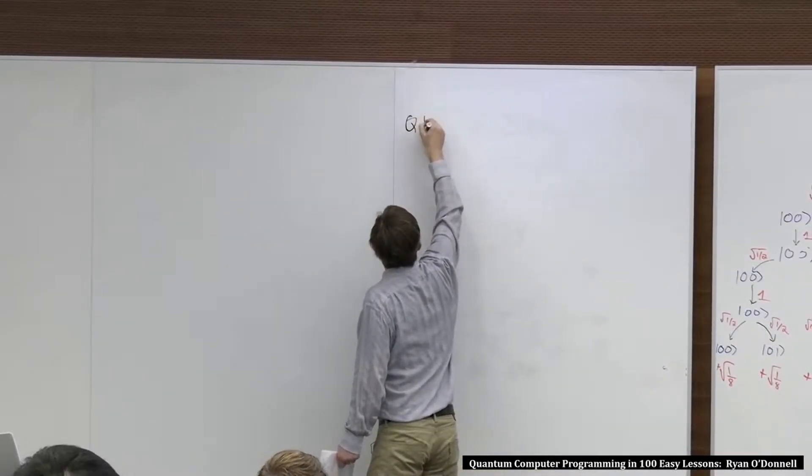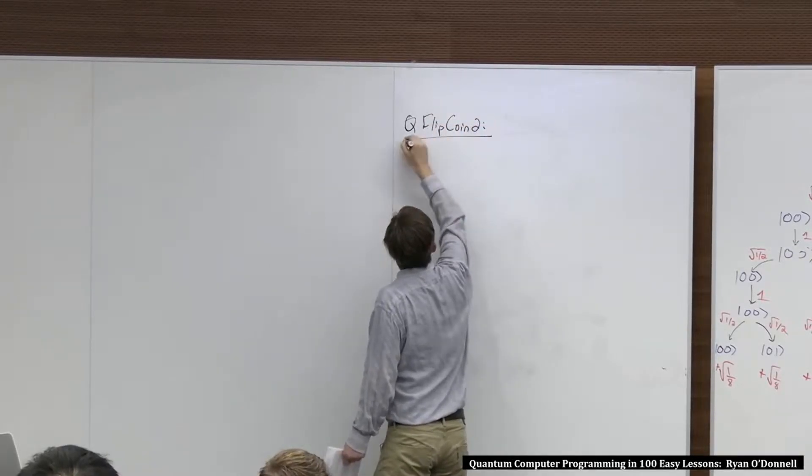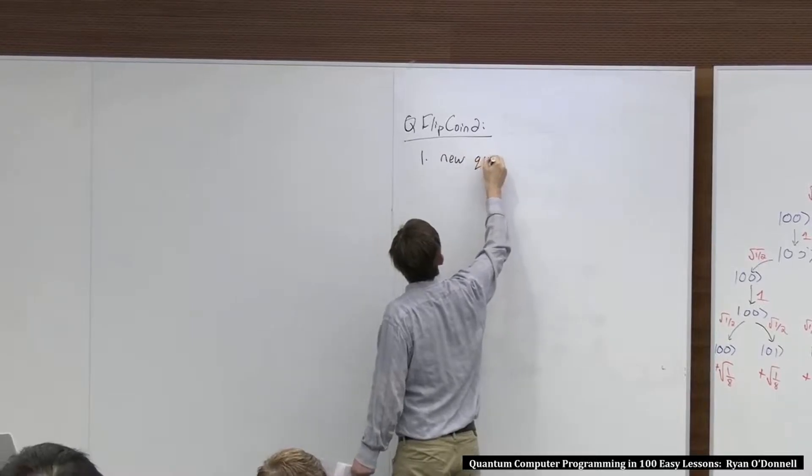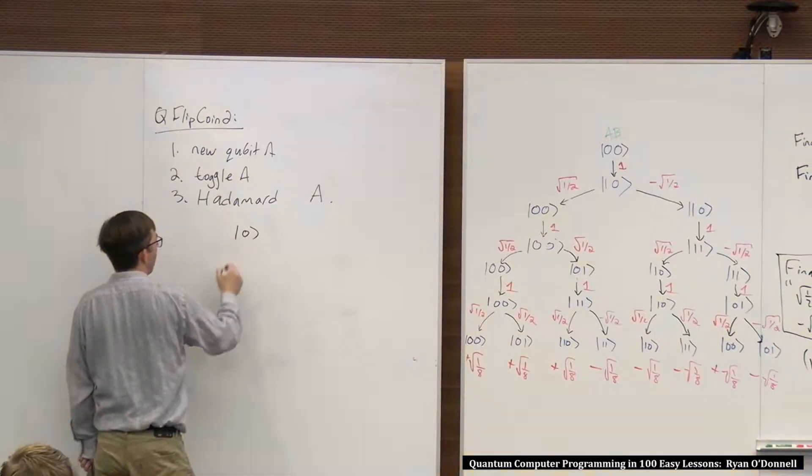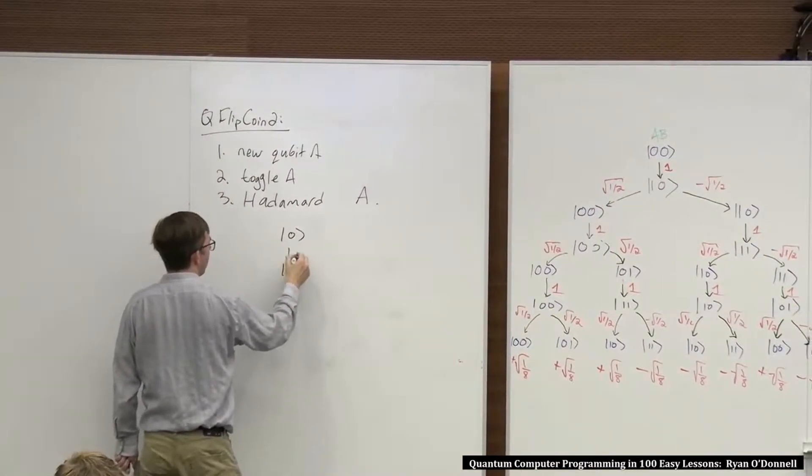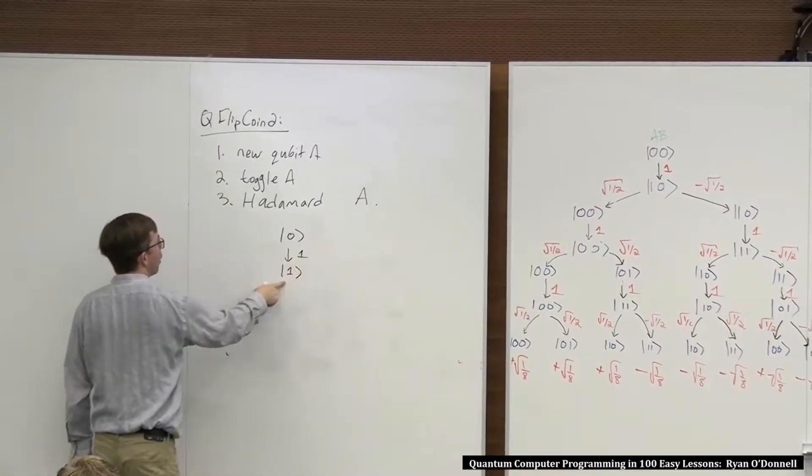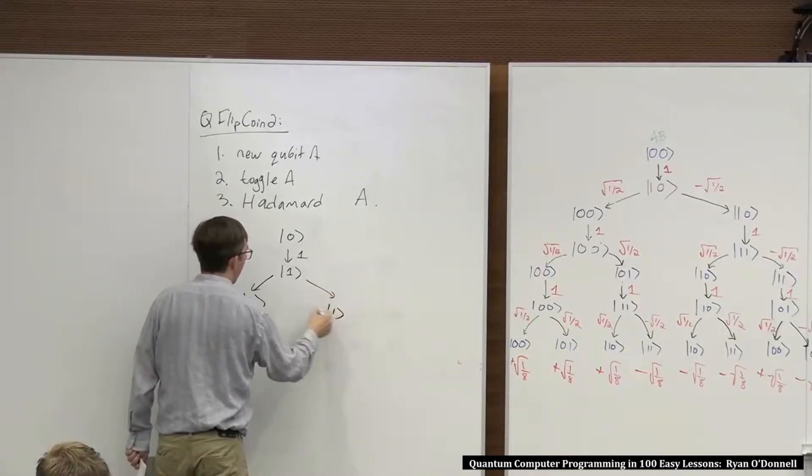Let's do quantum flip coin part 2. We'll do new qubit A, and then we'll toggle it. We'll go ahead and do the whole tree. There's one qubit, it's 0, and then we toggle it. With all the amplitude, amplitude 1, you go to 1, and now we Hadamard, 0, 1.